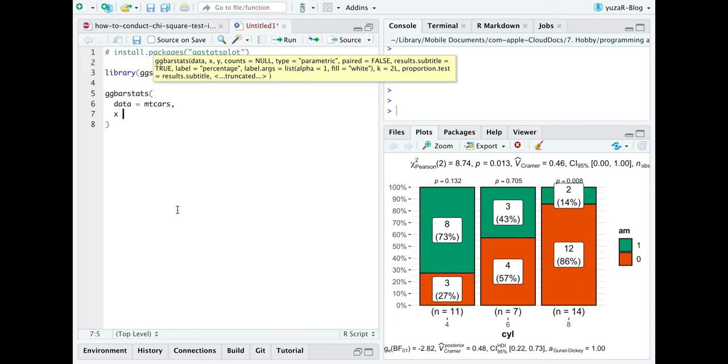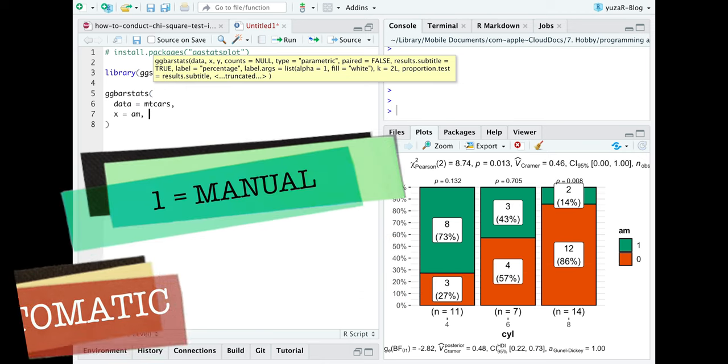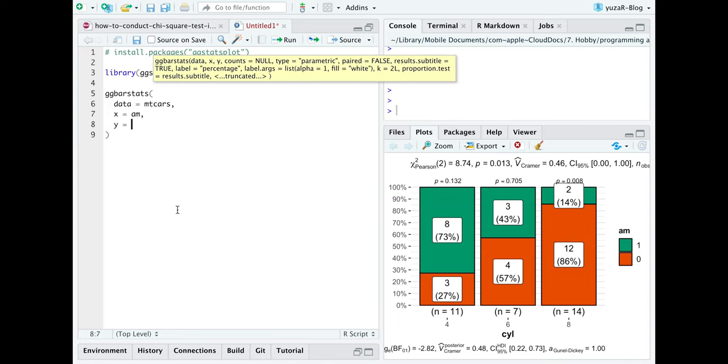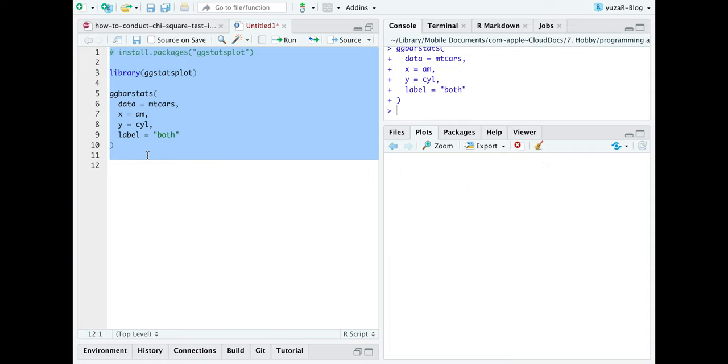Then, x as one of your categorical variables. For example, transmission of the car, with zero being automatic transmission and one being manual transmission. y would be your second variable. Let's take the number of cylinders: four, six, or eight, and the label argument, which displays both numbers and percentages of observations in each category.